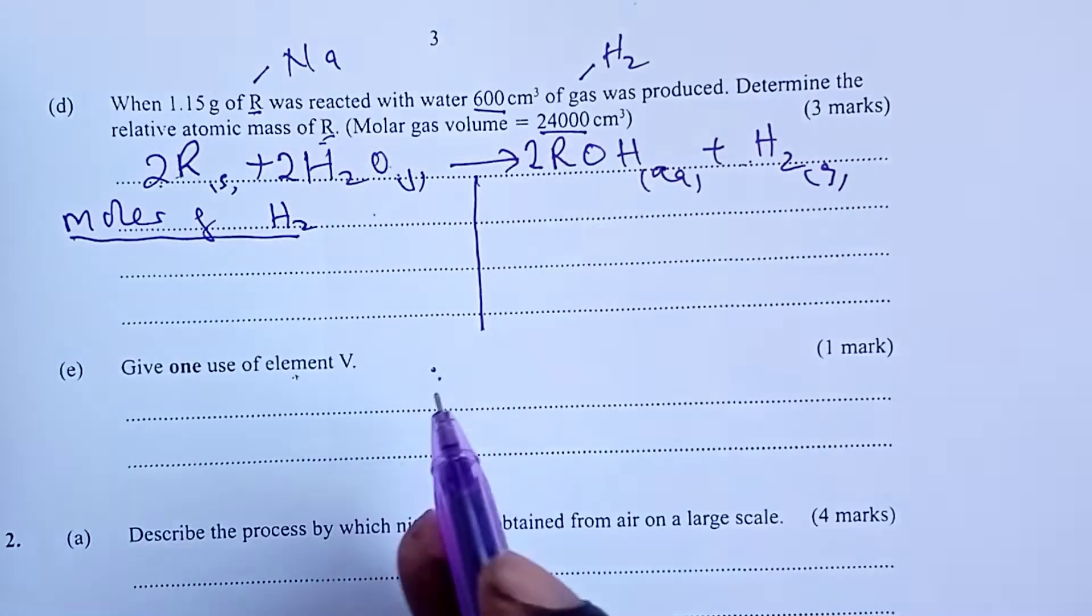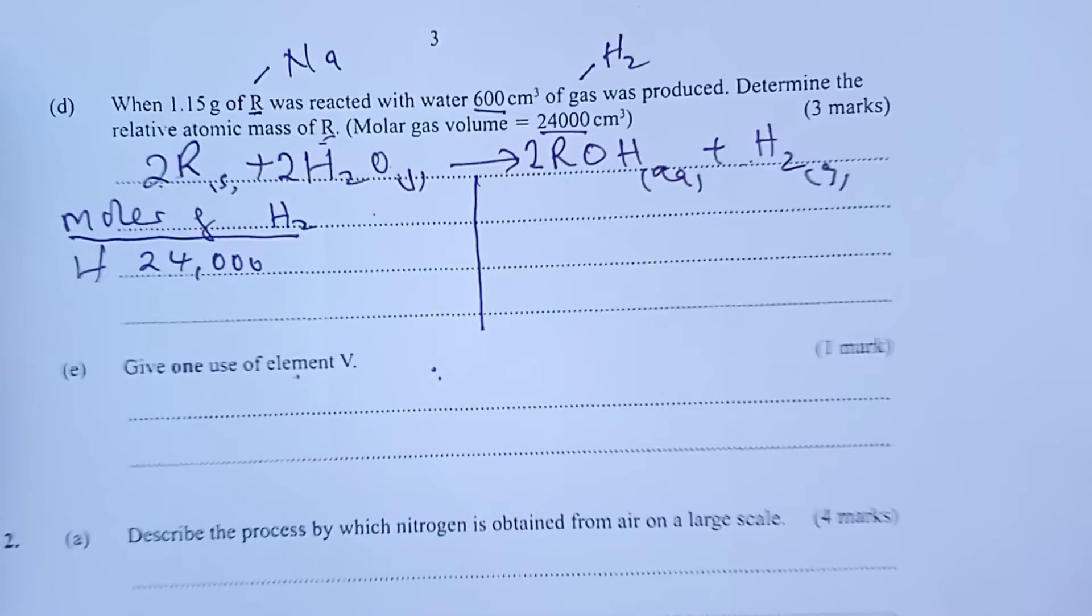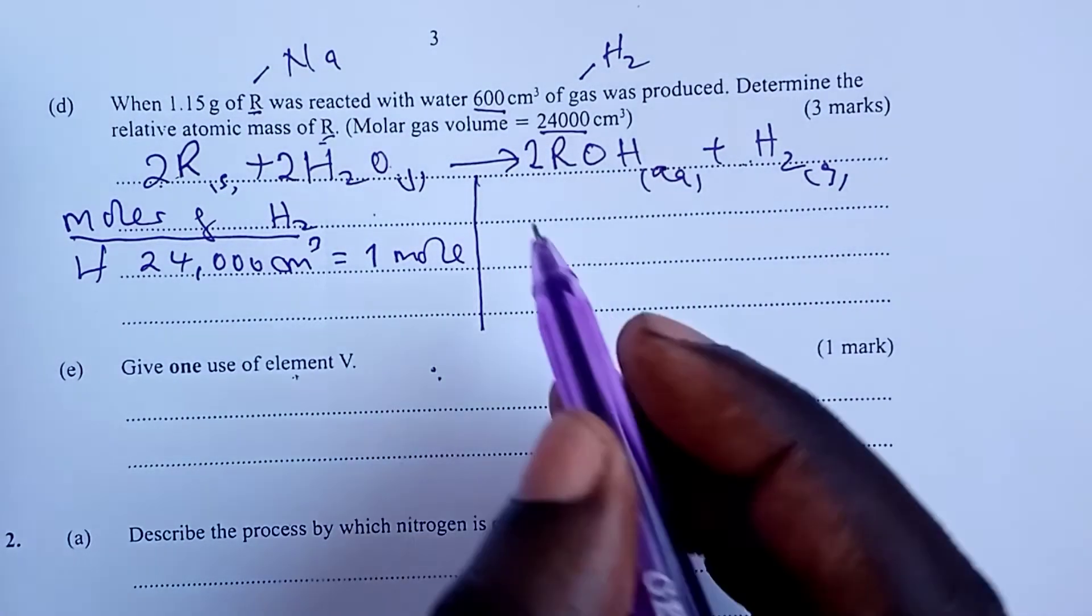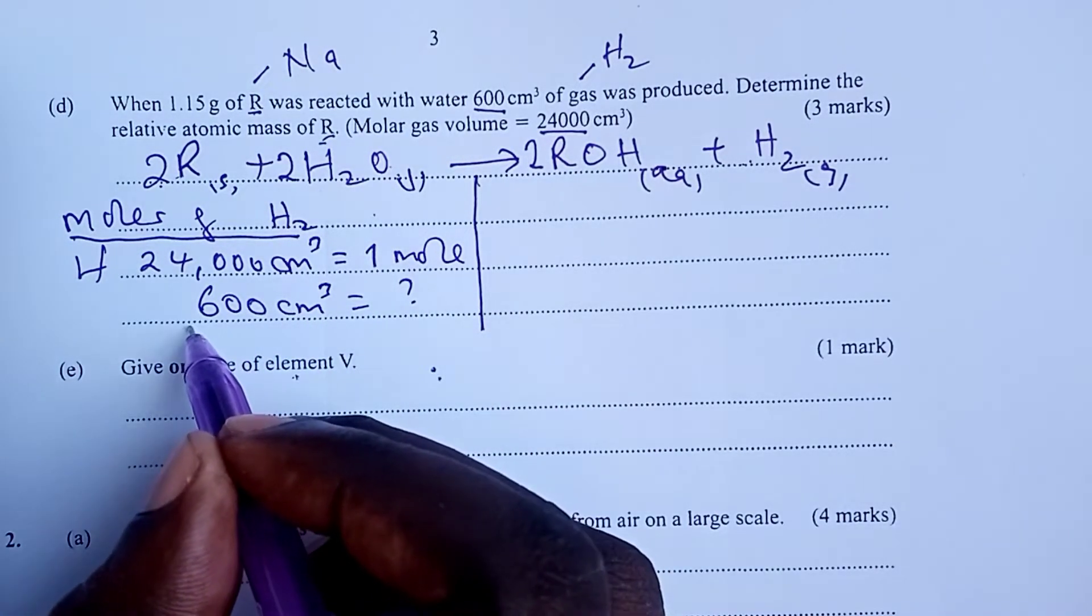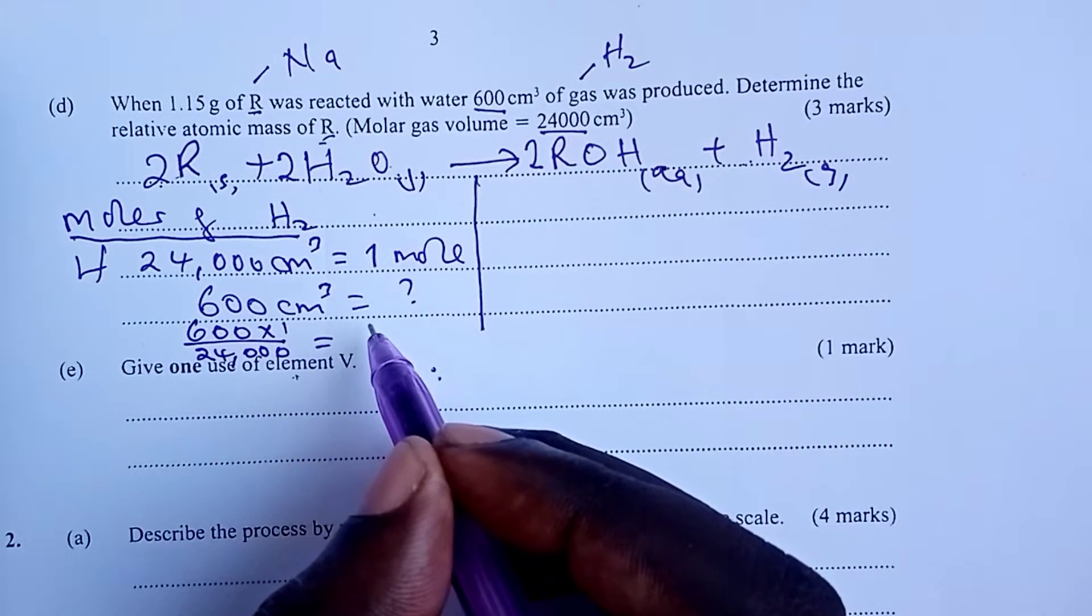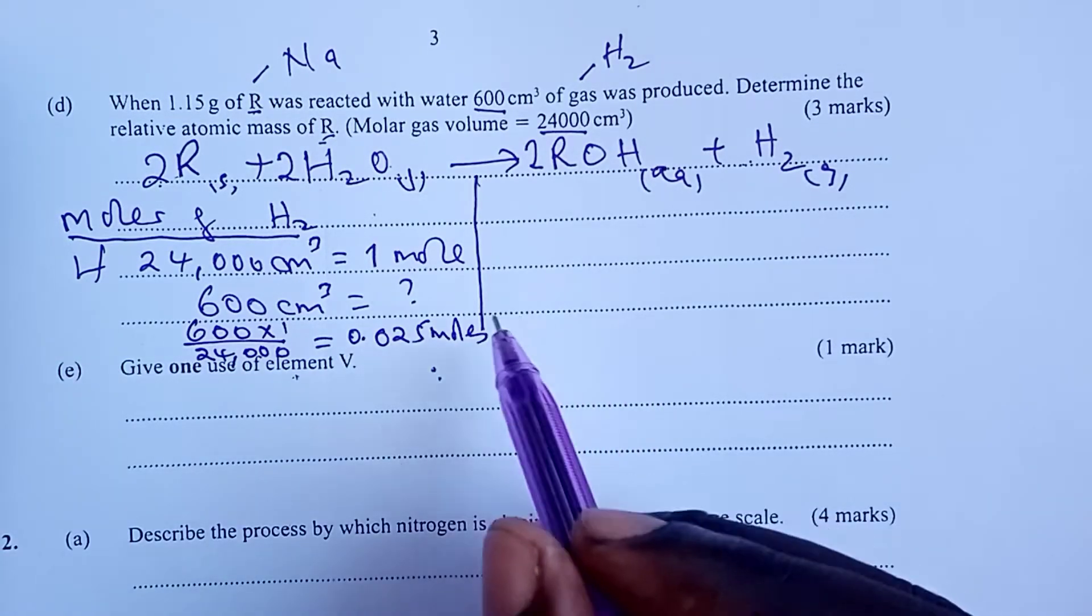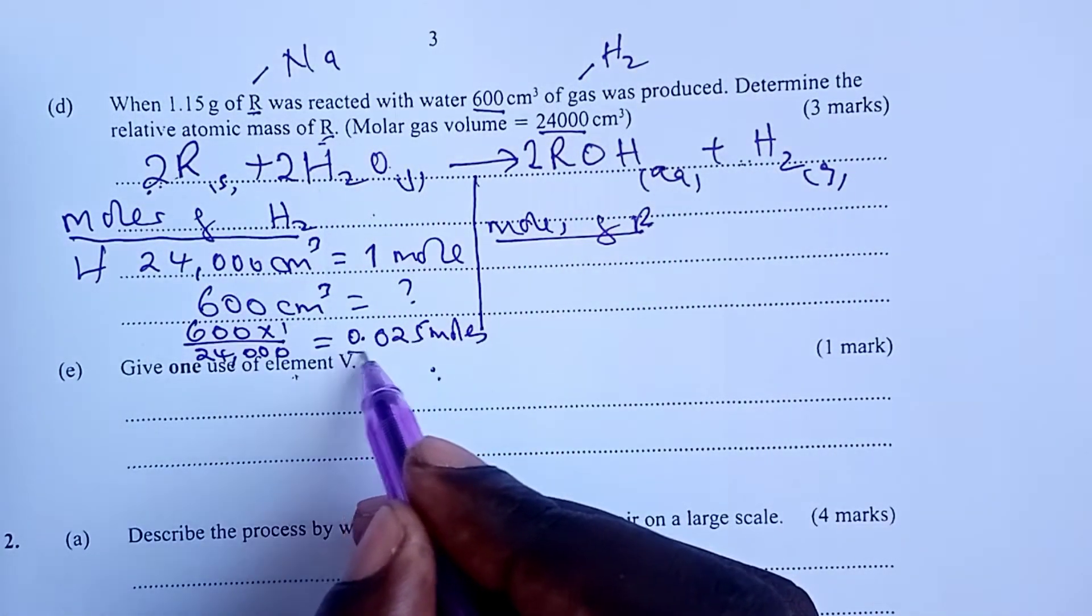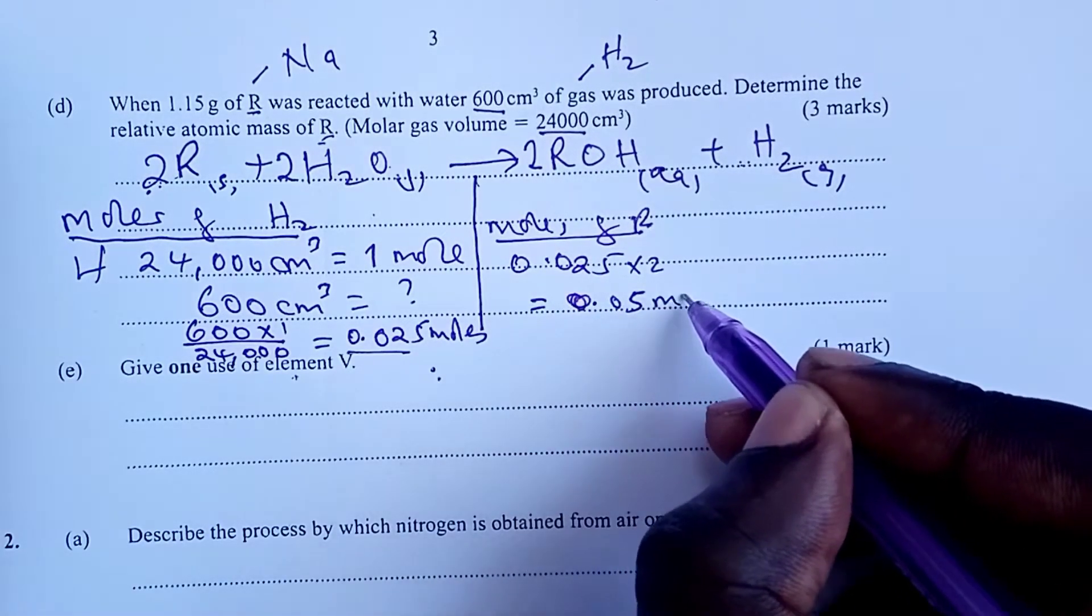From here, let's get moles of hydrogen. Using these volumes, we are able to get moles of hydrogen. And here, we are using first principle approach. We know 1 mole of hydrogen would occupy 24,000 cubic centimeters. That would be 1 mole of hydrogen. But, in our question, we only produced 600 cubic centimeters. How many moles would we have? Close multiplication is 600 times 1 divided by 24,000, and that gives me 0.025 moles. Now, what about moles of R? The mole ratio is 1 is to 2, so you simply multiply this by 2 to get moles of R, and that gives us 0.05 moles.